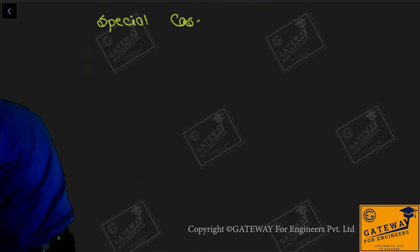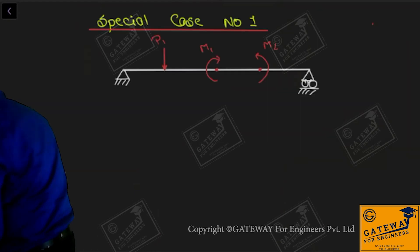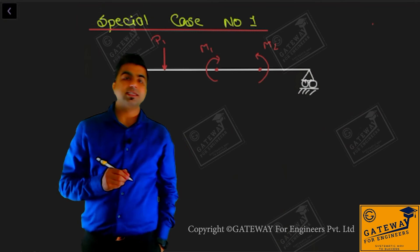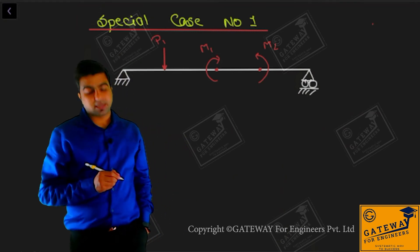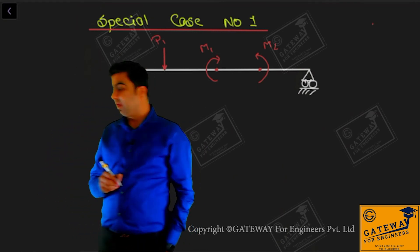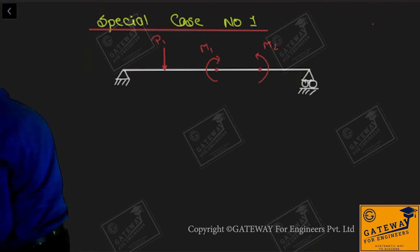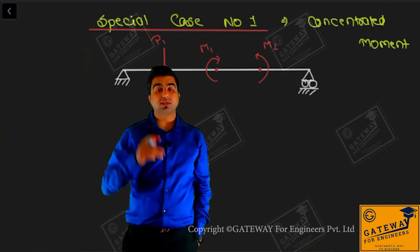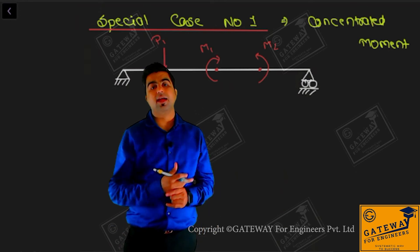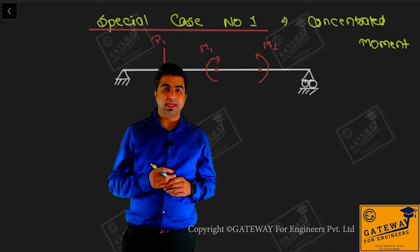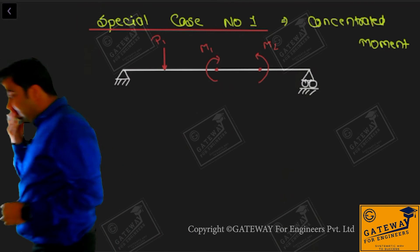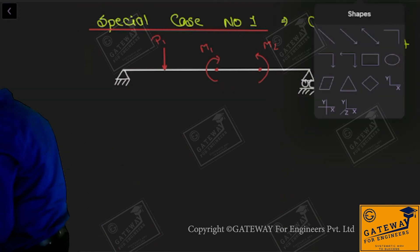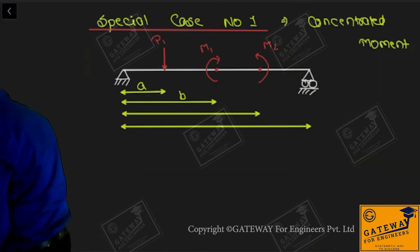Special case number one. This is a simply supported beam subjected to a concentrated moment. Special case one is about concentrated moments - if the beam is subjected to a concentrated moment, how do we deal with it? How do we apply Macaulay's method? This is special case number one. Let me explain the positions: this is A, this is B, this is C, and this is L.